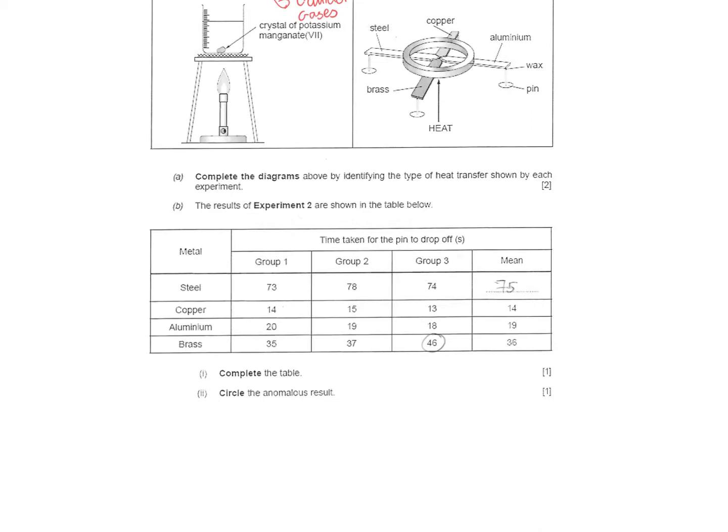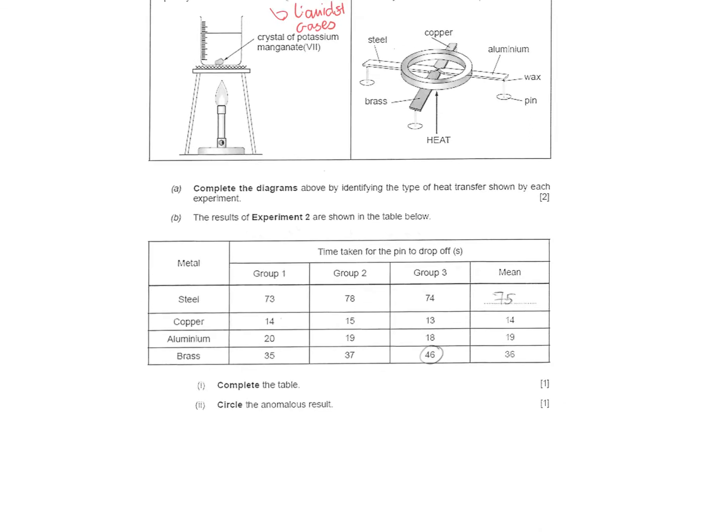You need to work out the mean. To work out the mean, you would do all three added together - 73 plus 78 plus 74, then divide it by 3, and that will give you 75.